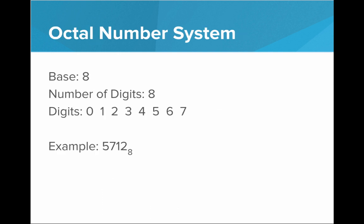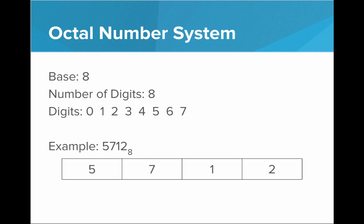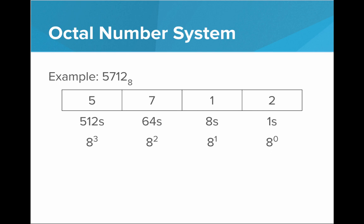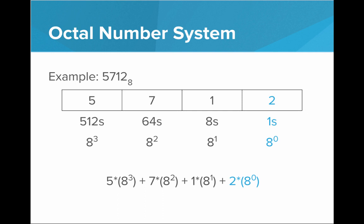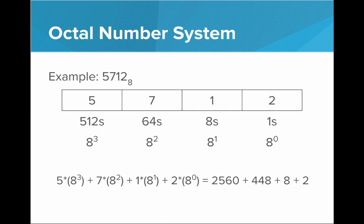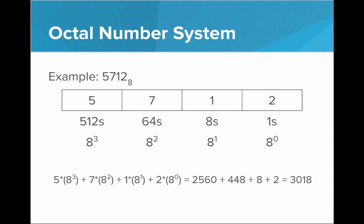Now what's interesting is we can have a number system with any base. For example, the octal number system has a base of 8 — that means we have 8 different digits: 0 through 7. Let's do the same thing with decimal and binary to see what 5712 in base 8 actually is in decimal. We lay out all the digits and put the place value underneath: far right is 8 to the 0, then 8 to the 1 which is 8, then 8 squared which is 64, and 8 cubed which is 512. We have 5 groups of 512, 7 groups of 64, 1 group of 8, and 2 groups of 1. So 5 times 512, 7 times 64, 1 times 8, and 2 times 1 gives us 3,018. So 5712 base 8 is 3,018 in base 10.